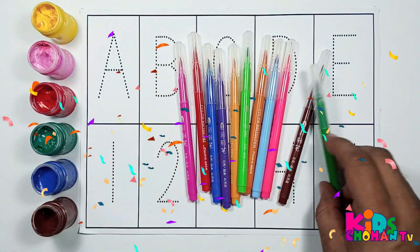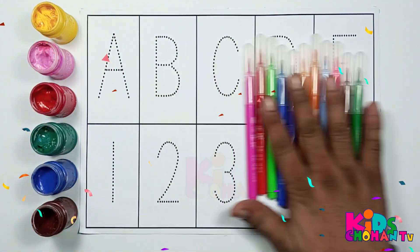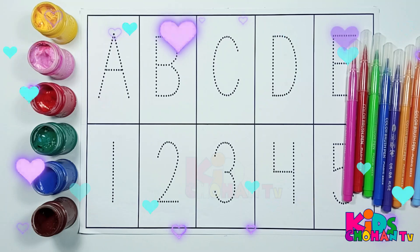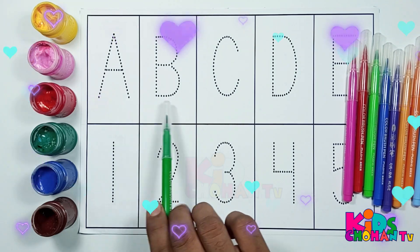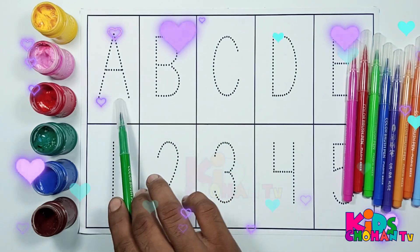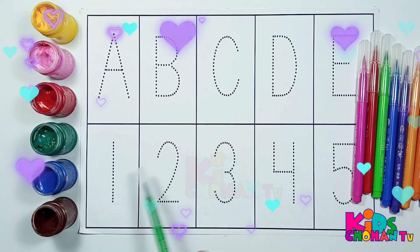Hi kids, in this video we will trace capital letters A, B, C, D, E and numbers 1, 2, 3, 4, 5. Let's start!